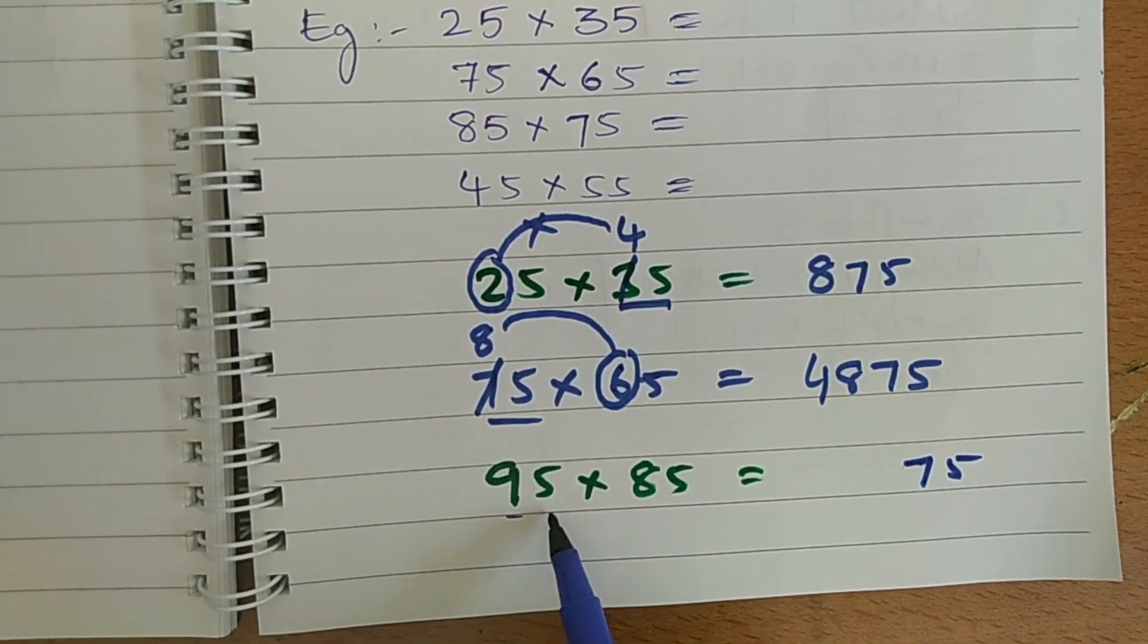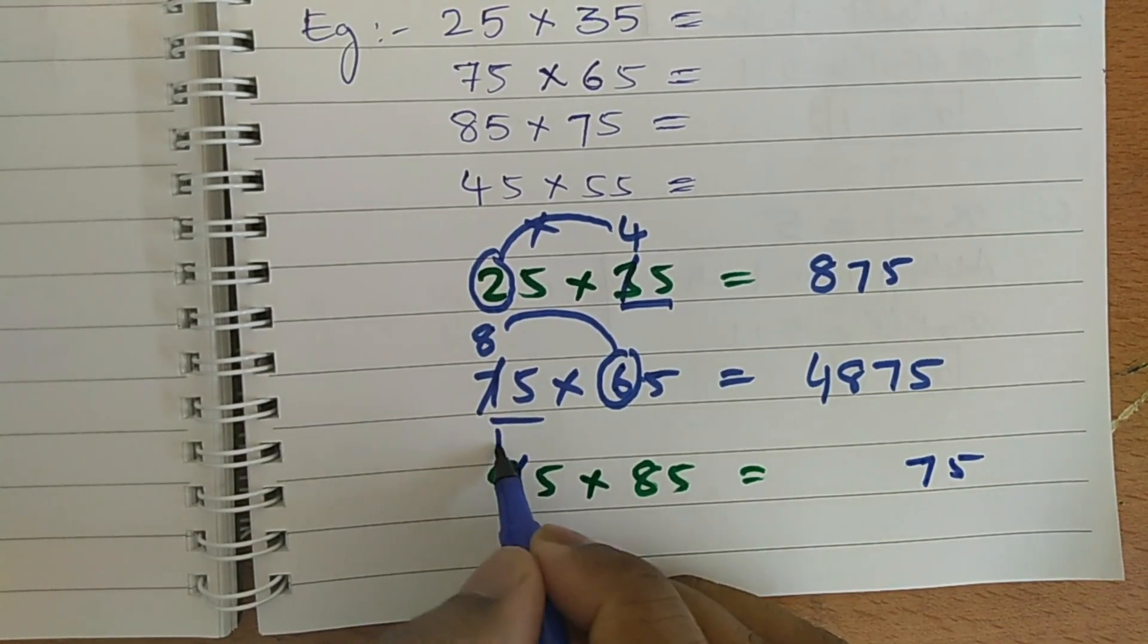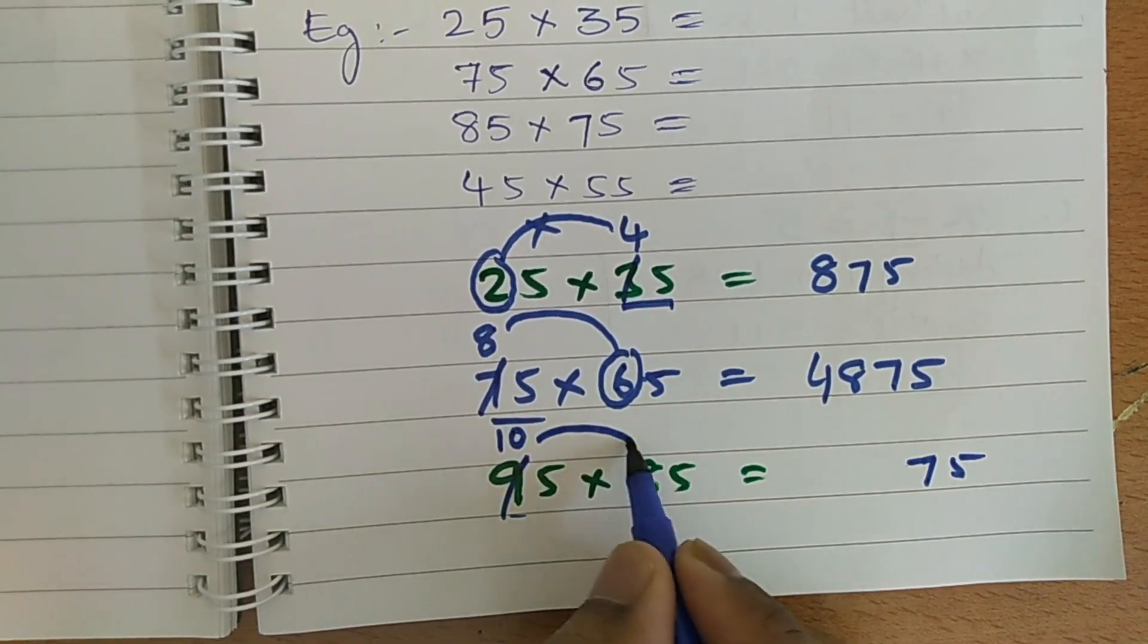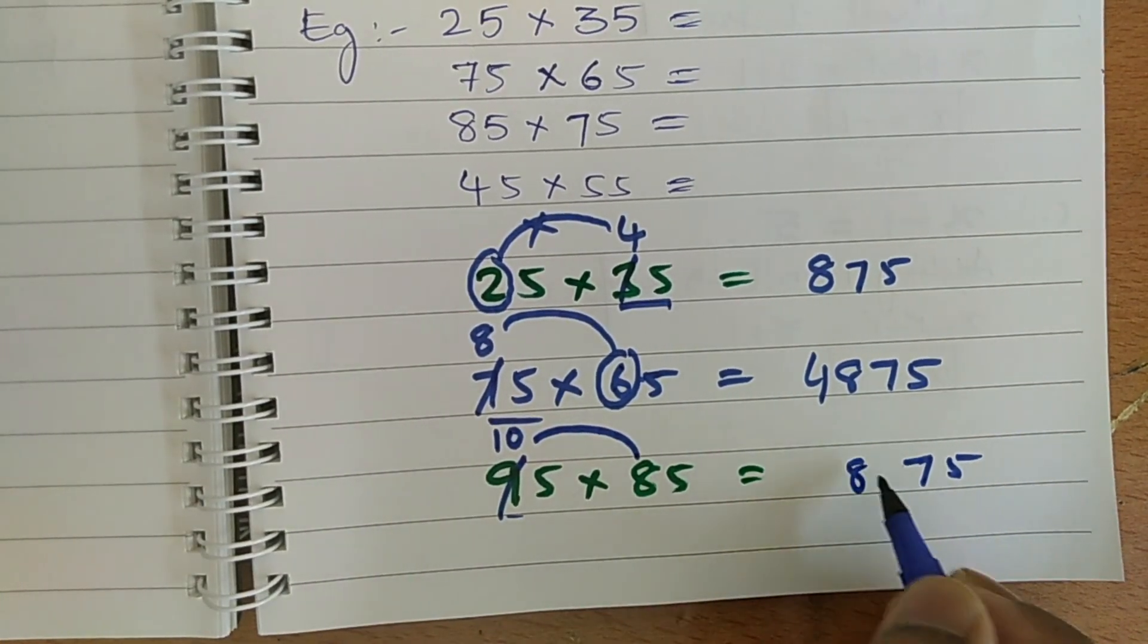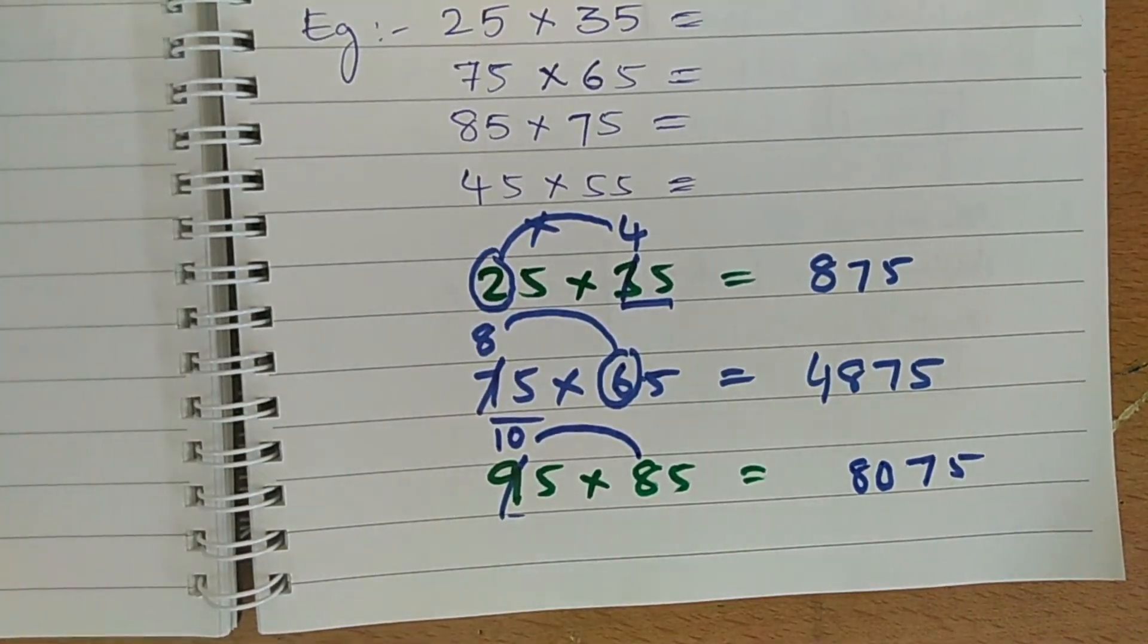So, here the biggest number is 95, so 9 is in 10th place. Just increase one number here. Now, multiply 10 into 8. So, 10 into 8 is 80. So, my answer is 8075.